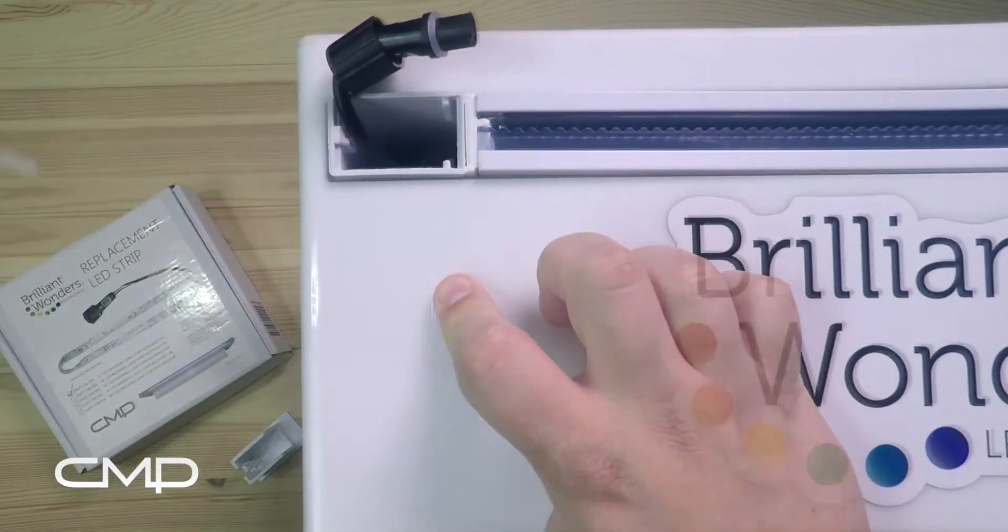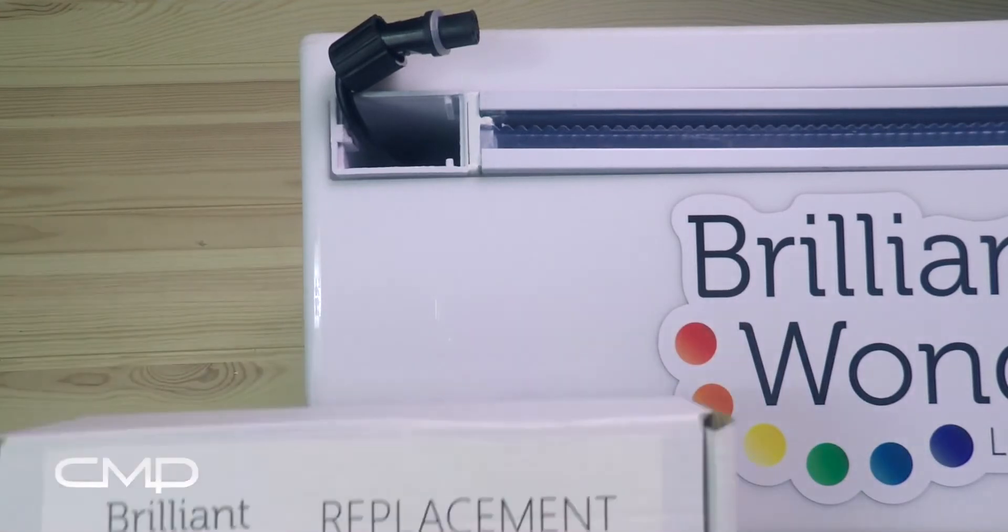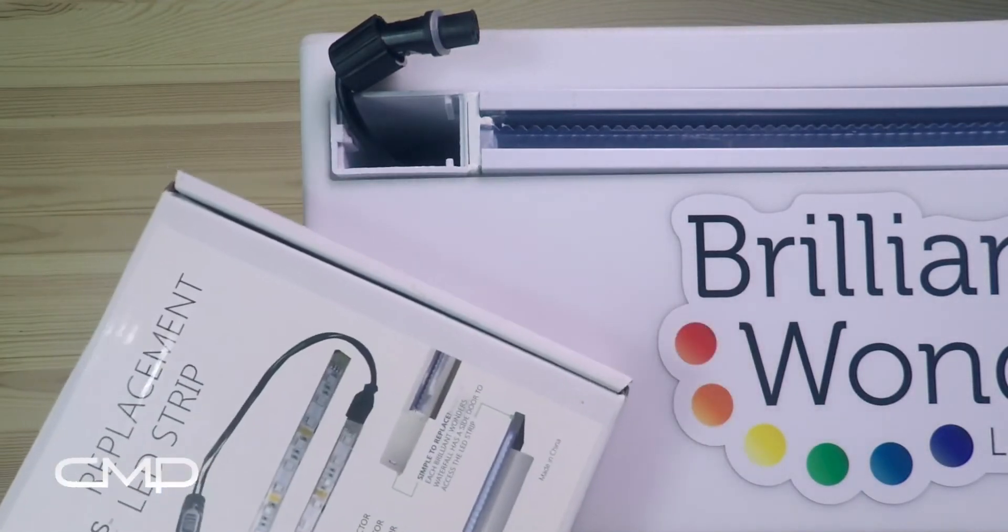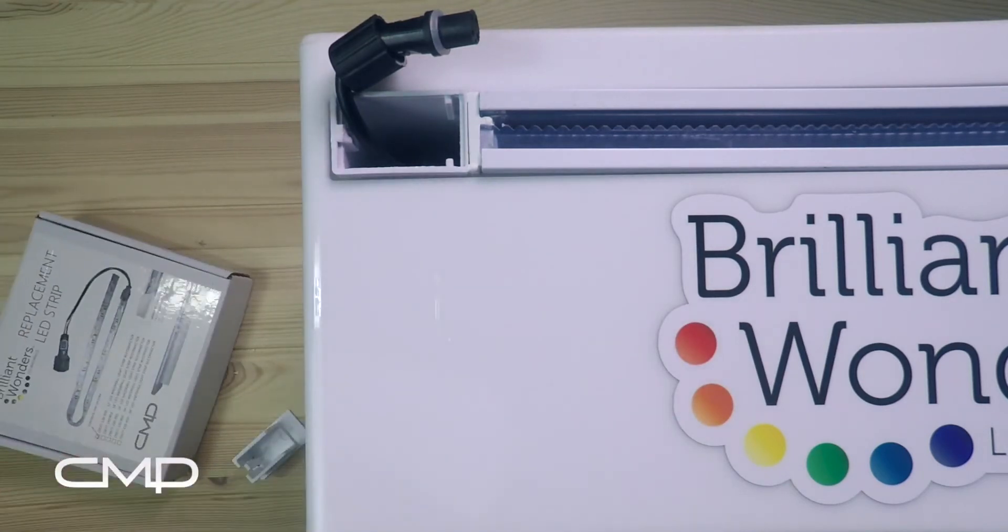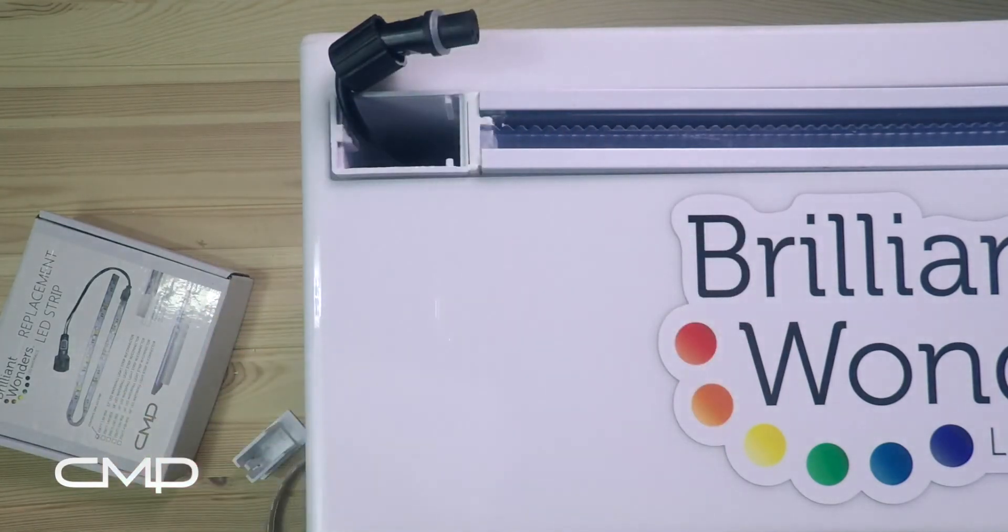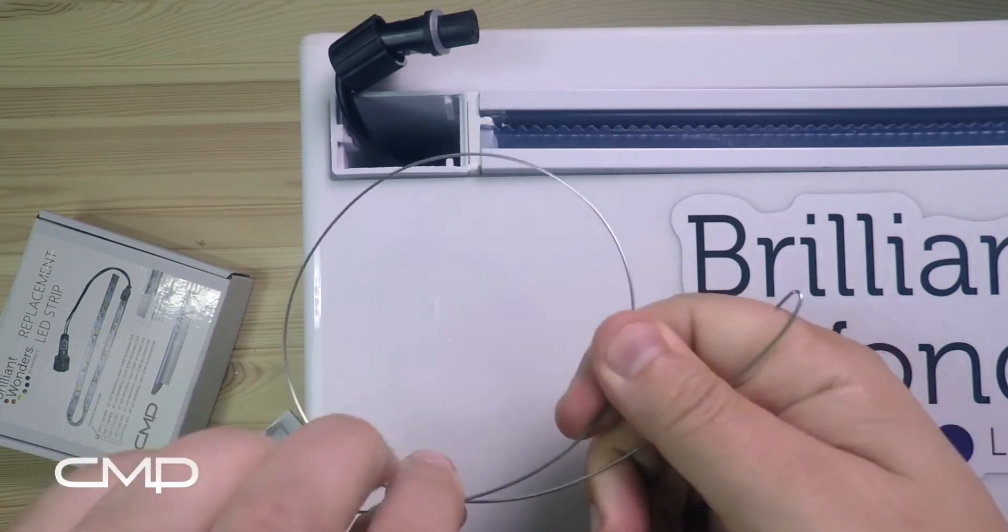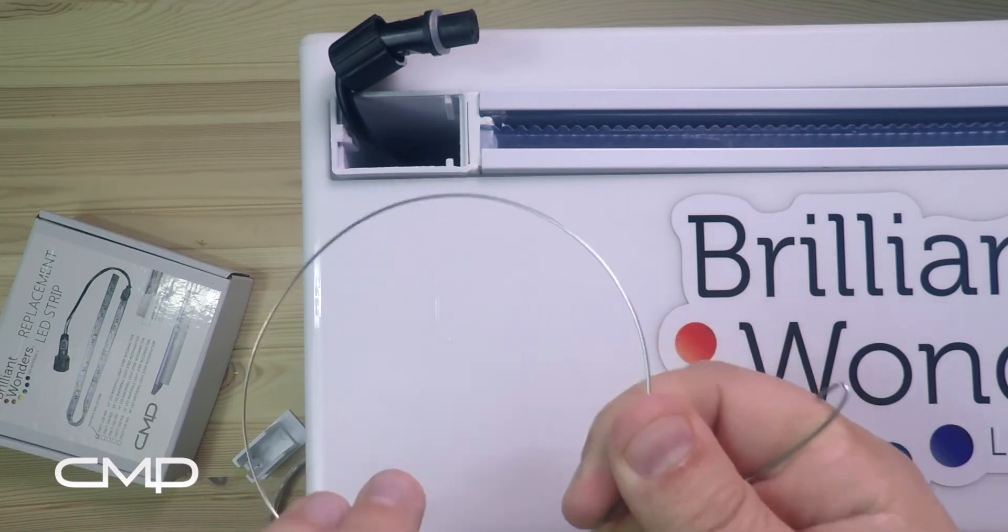All right, so the next step is to add in our replacement strip. You can order those any size from CMD. Inside of there you're going to have your new LED strip, and then you're also going to have a little wire that you can use to chase it through, wrapped up inside there.